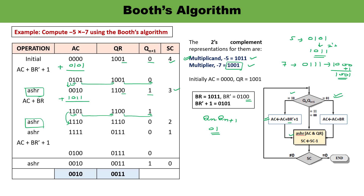Iteration 3: QN=0 and QN+1=0, so no add or subtract operation is performed — only arithmetic shift right. The content is shifted one bit right, with the sign bit (1) preserved as before. AC becomes 1111, QR becomes 0011, QN+1=0. Sequence counter is decremented to 1.